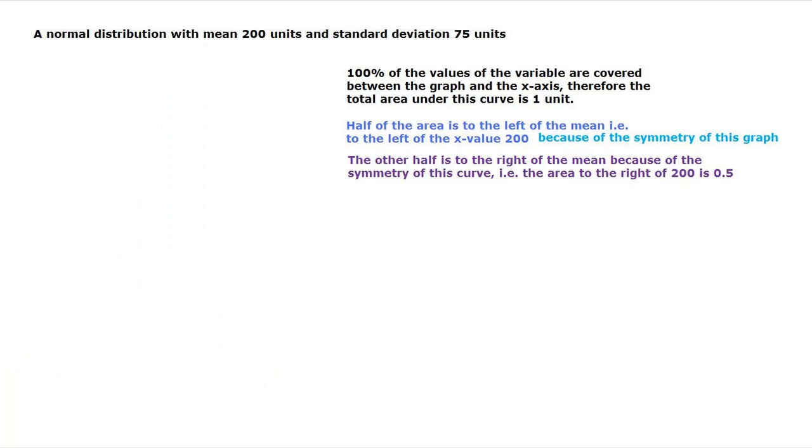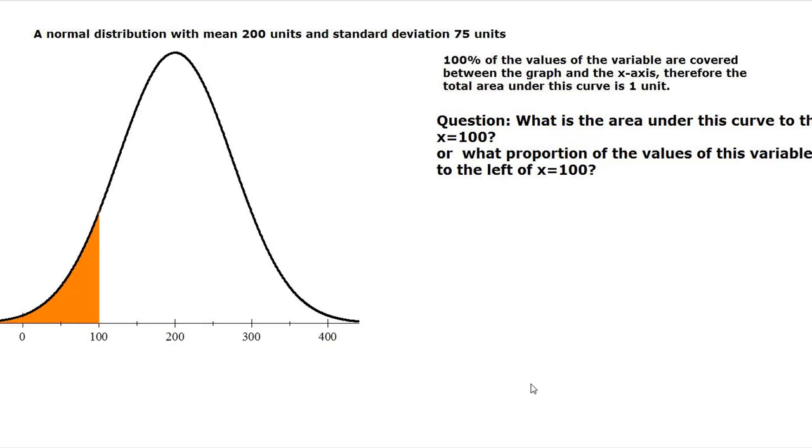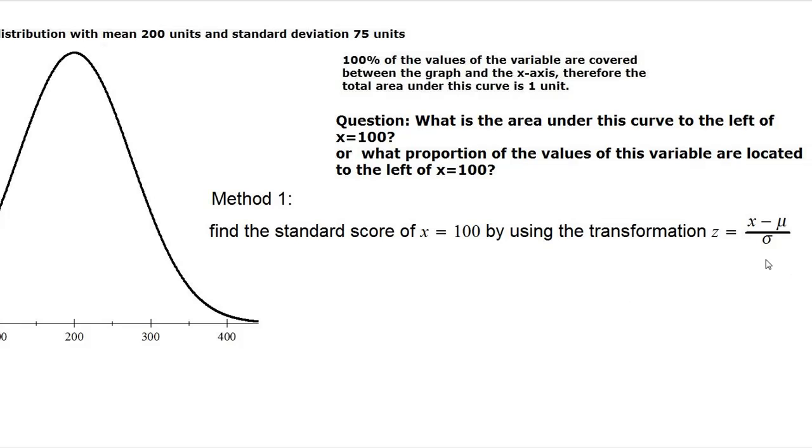Now, let's say we have to answer the question: what is the area under this curve to the left of x equals 100? Or in other words, what proportion of the values of this variable are located to the left of x equals 100? Now, one way to do this is to go ahead and transform x to a standard score using this transformation rule for normal distribution.